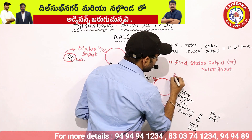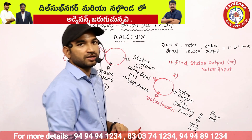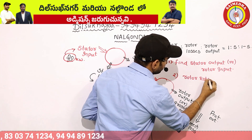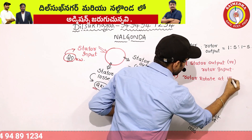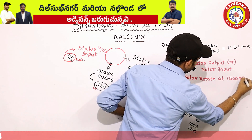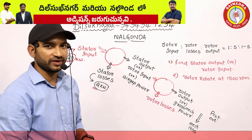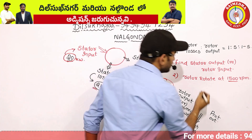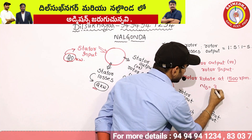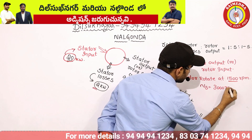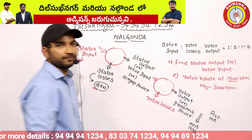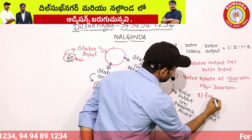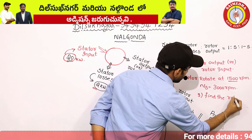Second question: the rotor speed is 1500 rpm and the synchronous speed is 3000 rpm. Find the slip and then find the rotor output (gross mechanical power). Slip = (Ns − Nr) / Ns = (3000 − 1500) / 3000 = 0.5.